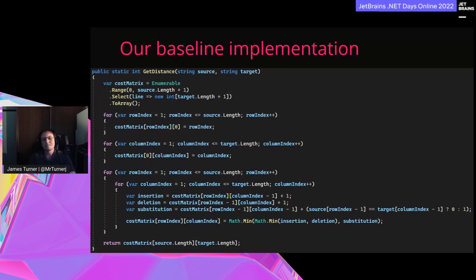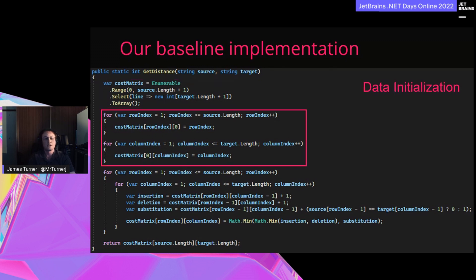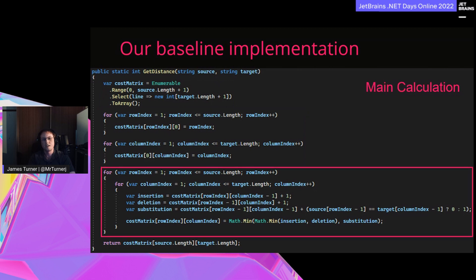This is our baseline implementation in C#. Nothing too crazy going on here, but it's also not overly optimized. We use LINQ to create a jagged array for our data structure, two loops for data initialization, and a nested loop for our main calculation logic.